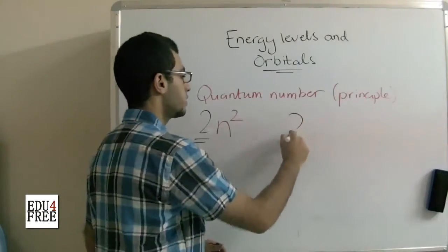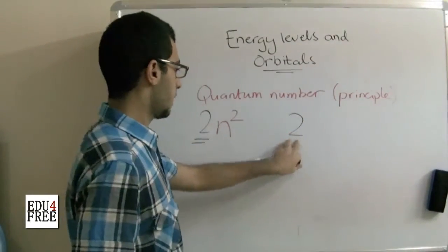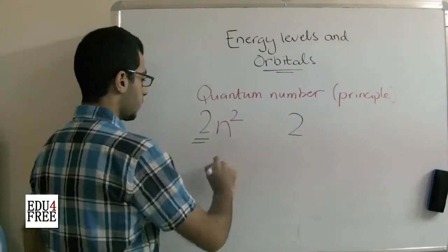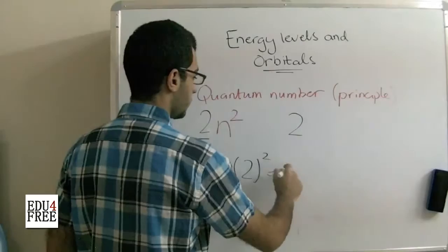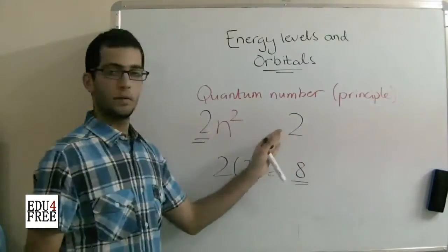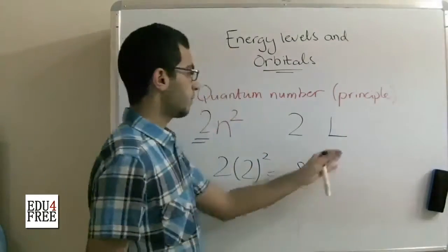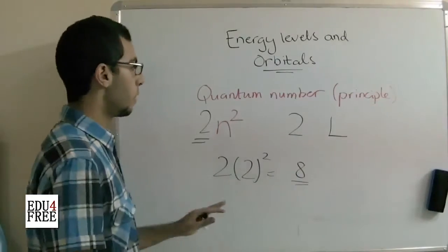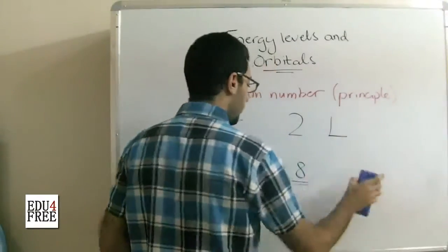For example, the second energy level, in order to know the number of electrons which is capable to carry, we type the formula as 2 multiplied by 2 of power 2 which is 2 by 4 to get a final result of 8. So the energy level 2 or the energy level L is capable of carrying 8 electrons at most.